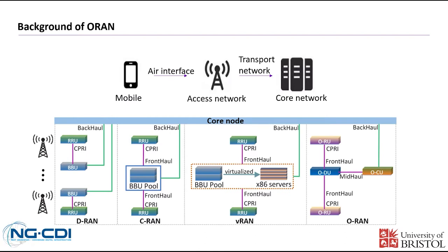First, I'm going to introduce some background of O-RAN. RAN means the Radio Access Network, which is a part of the critical infrastructure of modern mobile communication networks. RAN bridges UEs and core networks. RAN interacts with UEs directly and routes UE data to the core network, so the service quality of RAN directly affects the UE experience.